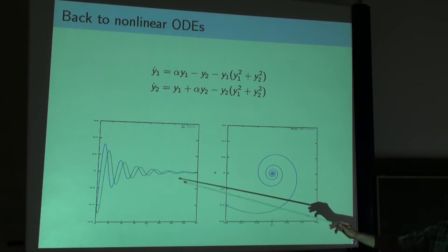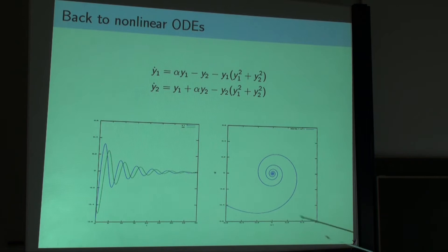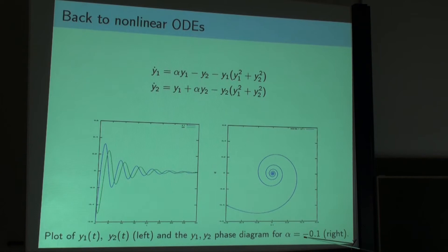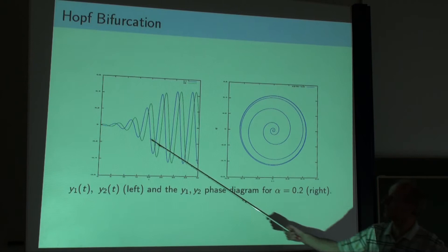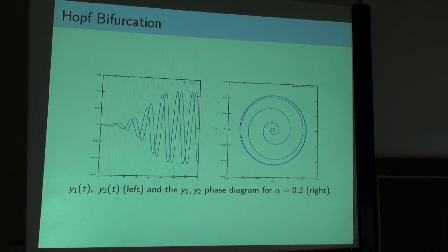What you see here is nothing new - we have an oscillation with an exponential decay. This is for alpha equal to minus 0.1. Now if we change alpha, we may get interesting different behavior. For alpha equal to 0.2 with initial conditions y1 and y2 close to but not exactly 0...